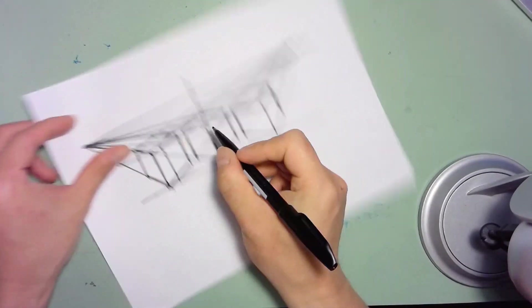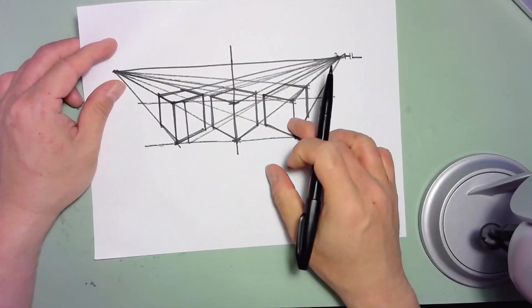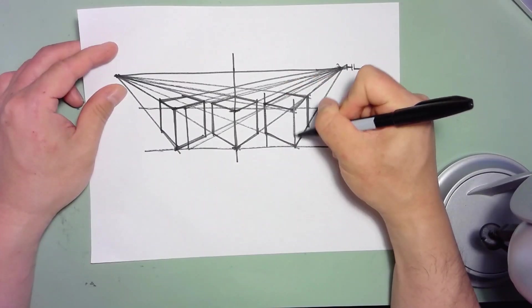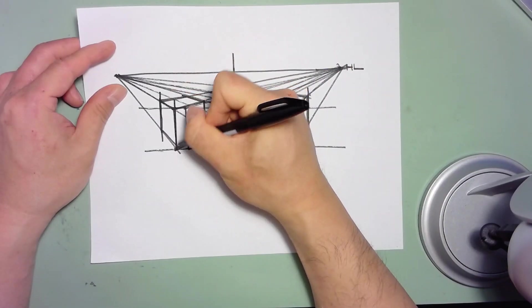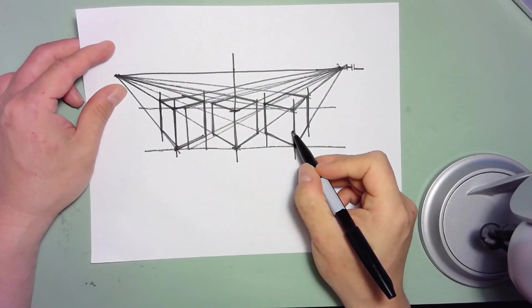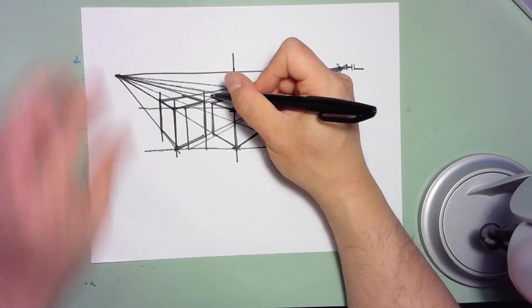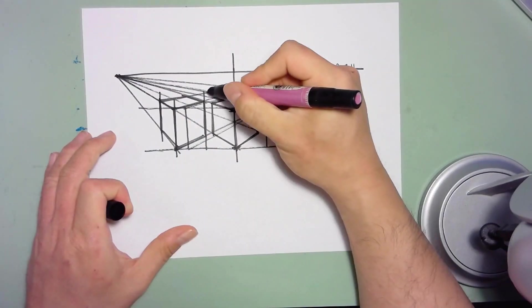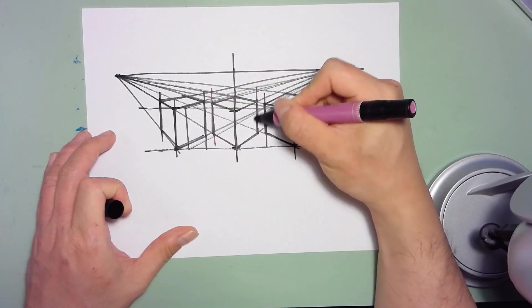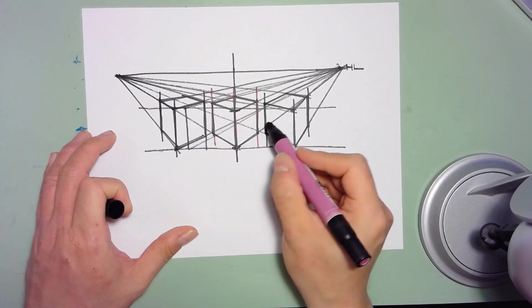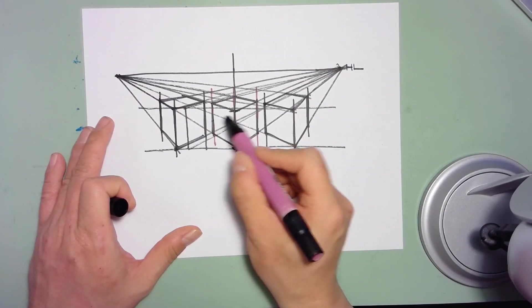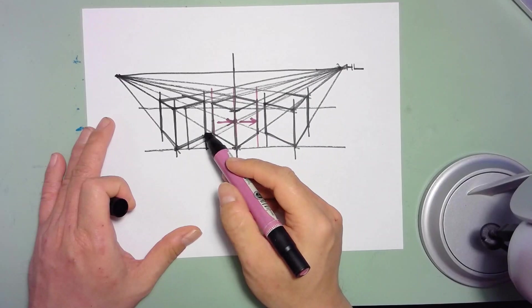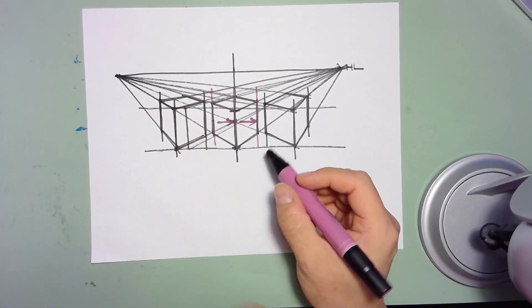One thing you'll notice is when you shift this cube laterally to the right or to the left, these edge lines start to change in terms of their relationship to each other. When you first look at the centrally located cube, you'll notice that its edges are basically equally spaced apart. The distance from here to here is basically the same as the distance from here to here. That's very typical of a centrally located cube.